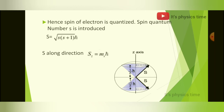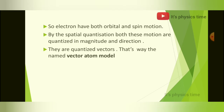To represent magnitude: S is equal to root of s(s+1) times h-cross. For direction: S is equal to ms times h-cross. This picture represents the magnitude and direction of S.